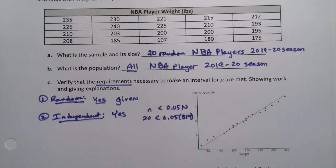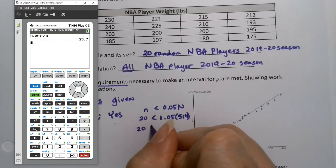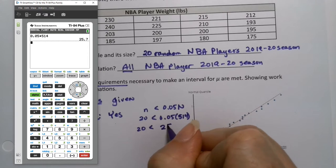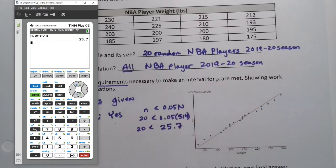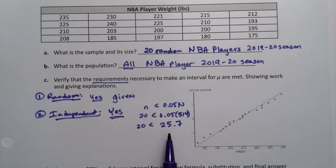This is the hardest one to prove. It's because n little n which was 20 is less than 0.05 of capital N which is 0.05 of 514. Now we have to prove that. So 0.05 times 514 is 25.7, and so this is yes. We proved that 20 was indeed less than five percent of all of the NBA players for that season.